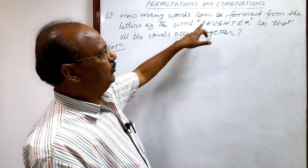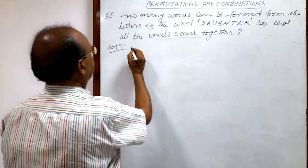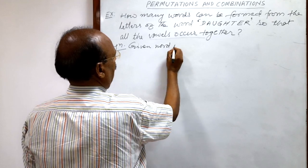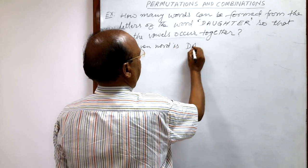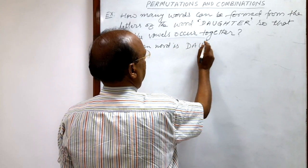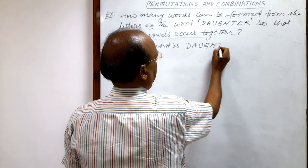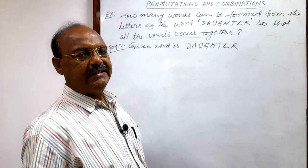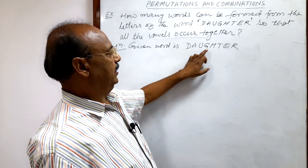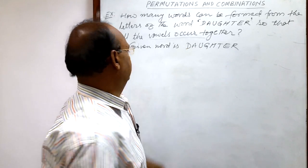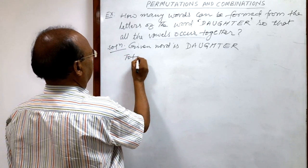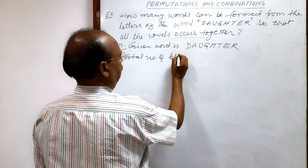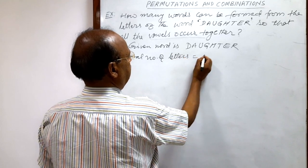Given word is daughter. Here total number of letters is 8. 1, 2, 3, 4, 5, 6, 7, 8. So total number of letters is 8.